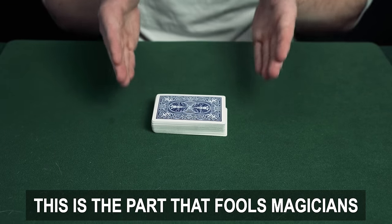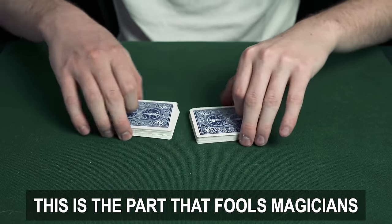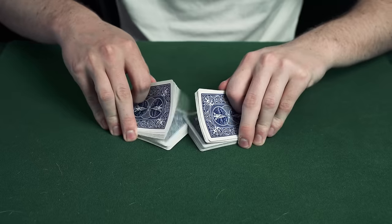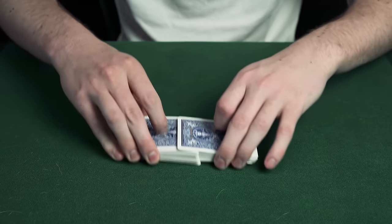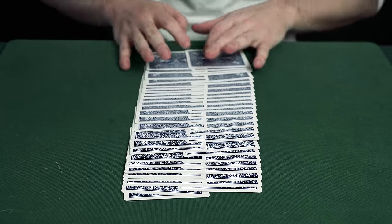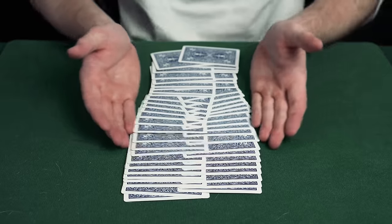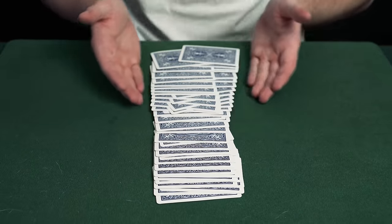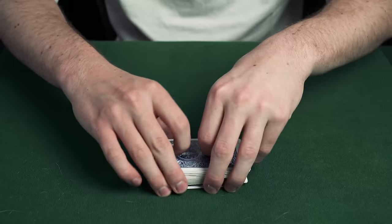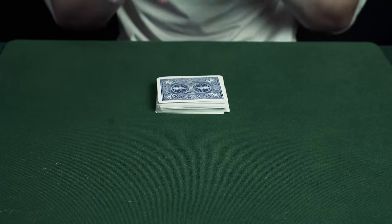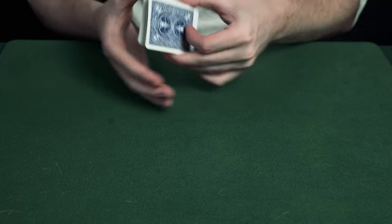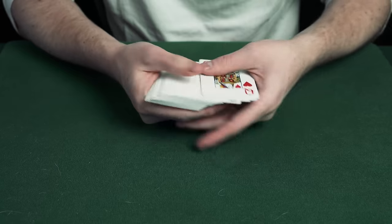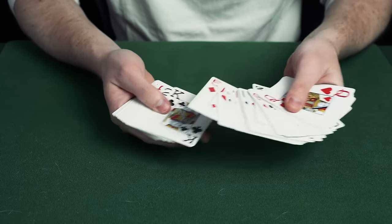This is the part that fools magicians so watch very carefully. The spectator takes the cards and mixes them up very fairly. They then push all the cards together. Burn this image in your head as it's important later on that you remember that all of the cards were genuinely mixed. If we turn over the cards you can see that they're all in a random order. Everything is clean and fair.